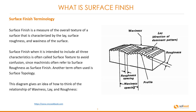Surface finish is a measure of the overall texture of a surface that is characterized by the lay, surface roughness, and waviness of the surface. Surface finish, when it is intended to include all three characteristics, is often called surface texture to avoid confusion, since machinists often refer to surface roughness as surface finish.